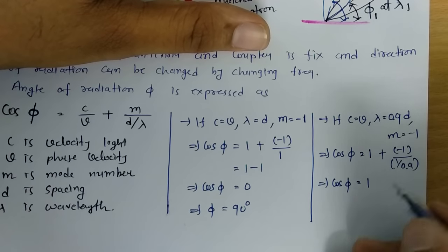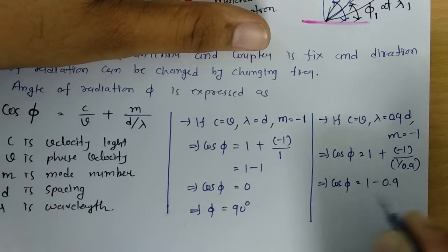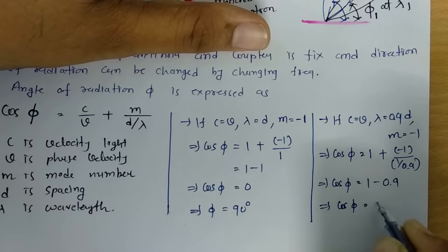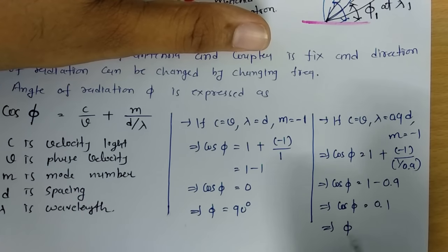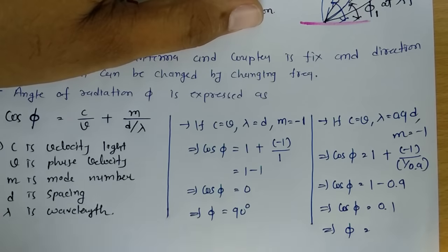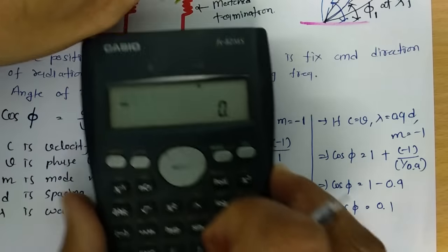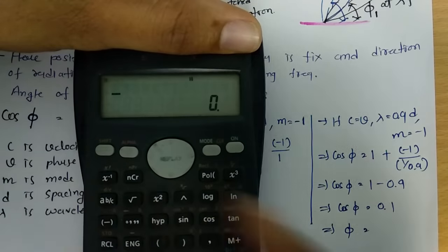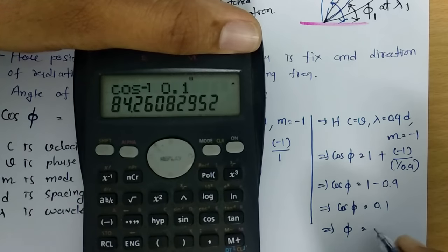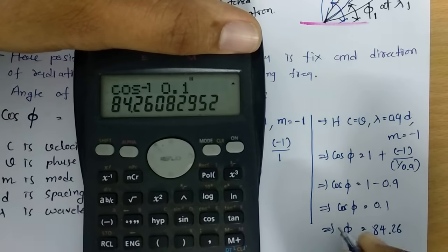cos(φ) that is 0.1. phi equals cos inverse 0.1. cos inverse 0.1 that is 84.26.